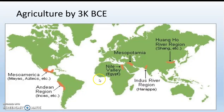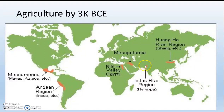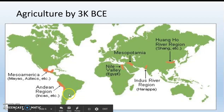On this map we see all of the places where agriculture popped up on its own. The very first place where agriculture was invented is Mesopotamia, which is modern-day Middle East. Second is the Nile River region in North Africa and modern-day Egypt. Third is the Indus River region in India. Fourth is along the Huang He River in China. And eventually we get farming in Mesoamerica — modern-day Mexico — by the Mayas and Aztecs, and in the Andean region with the Incas, which we'll cover in Unit 3.